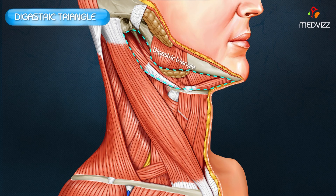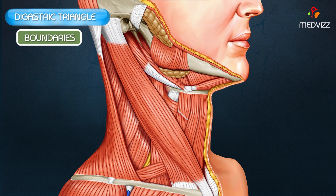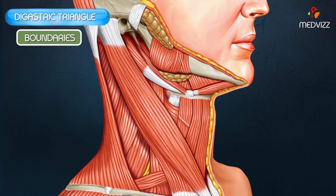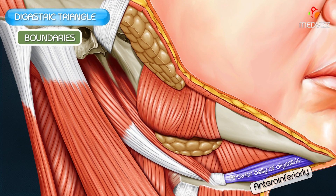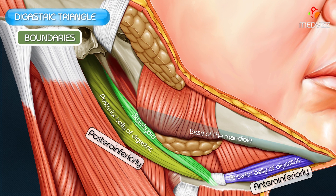What are the boundaries of the digastric triangle? As you can see in this picture, antero-inferiorly it is formed by the anterior belly of the digastric, and postero-inferiorly it is formed by the posterior belly of the digastric as well as the stylohyoid muscle. Superiorly, the base is formed by the base of the mandible and the line joining the angle of the mandible to the mastoid process.